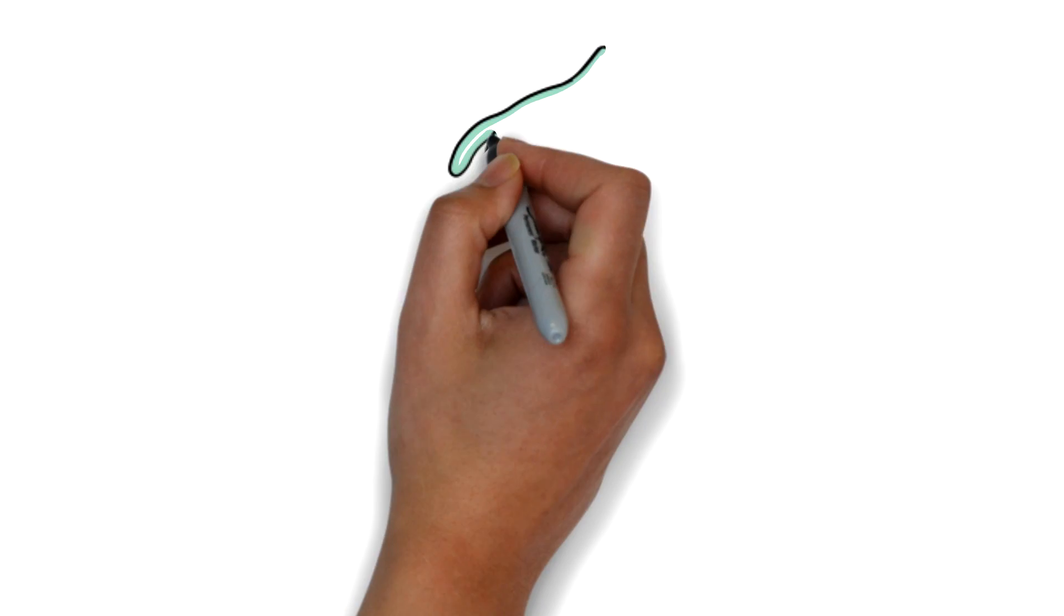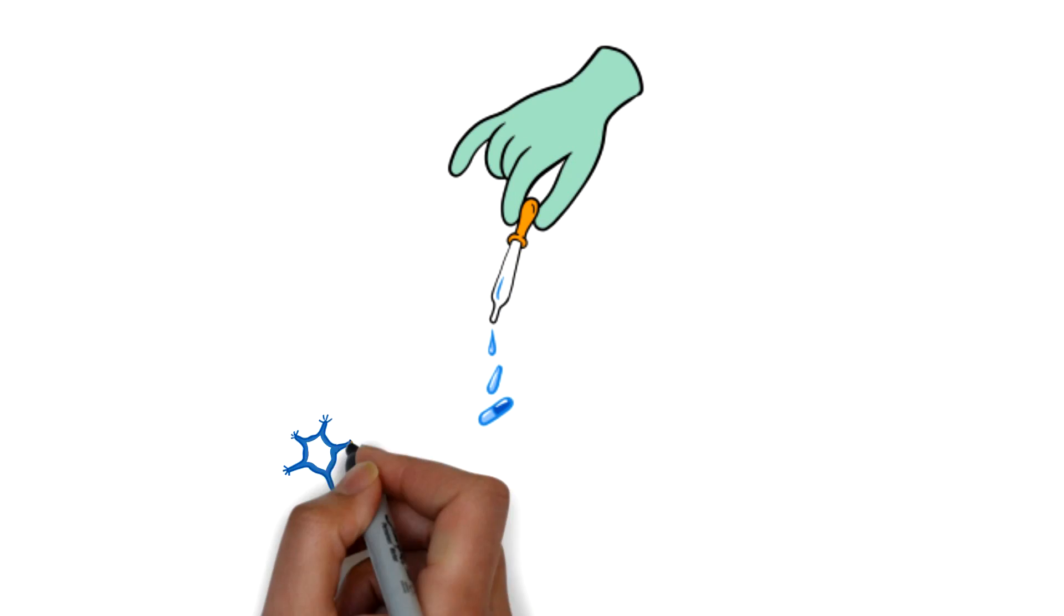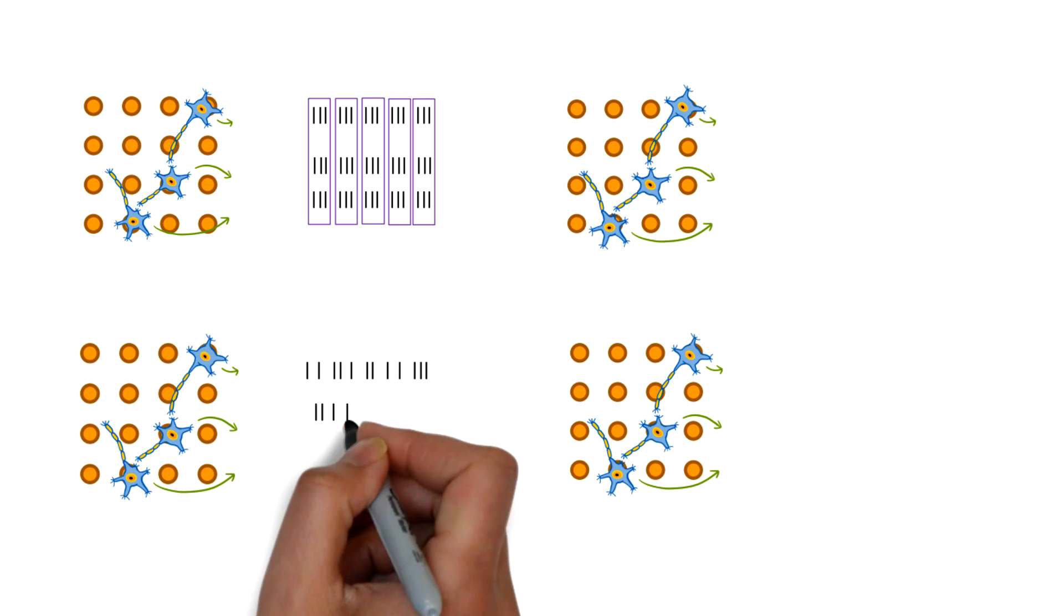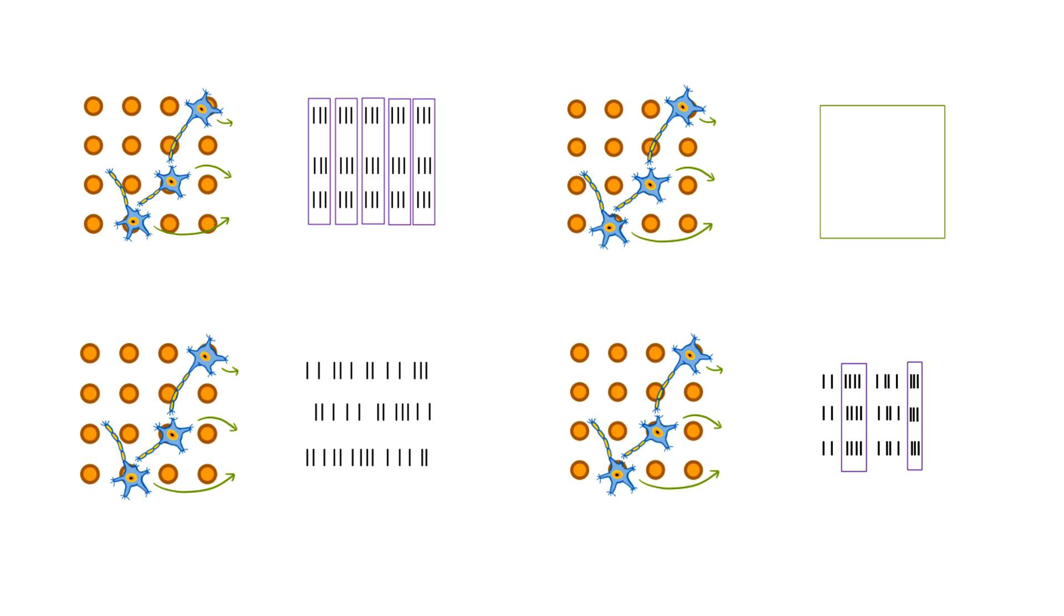In a dish, iCell Glutoneurons display synchronous activity and are thus a useful model for testing drug response on neuronal activity. Using iCell Glutoneurons this way may cause changes in neuronal activity, such as increased synchrony, decreased synchrony, cessation of activity, or have no effect at all. The results allow one to identify and understand potential effects of a drug.